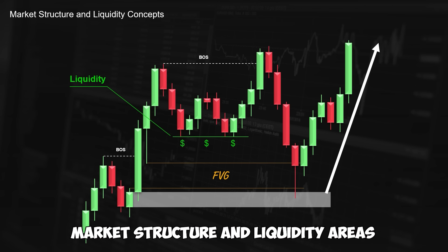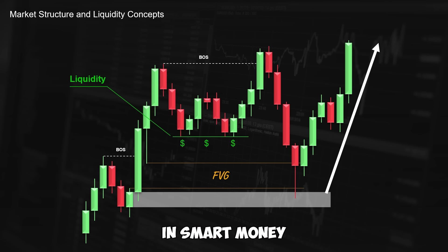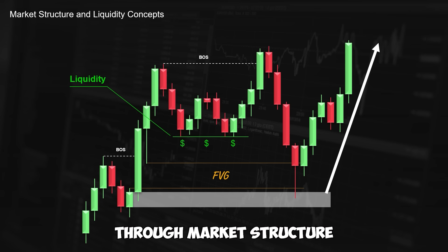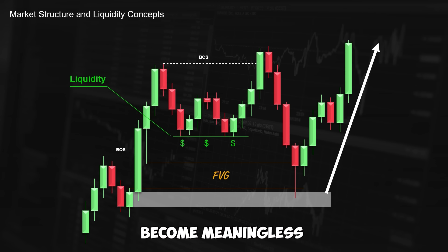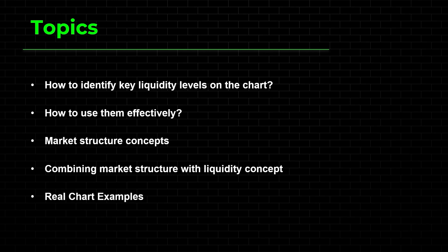Market structure and liquidity areas are two inseparable concepts in smart money. Many liquidity areas find meaning through market structure, and many market structure levels become meaningless with liquidity concepts. In this video, first, we're going to talk about identifying the key liquidity areas on the chart and how to effectively use them. And second, we're going to explain how we combine liquidity with market structure concepts.